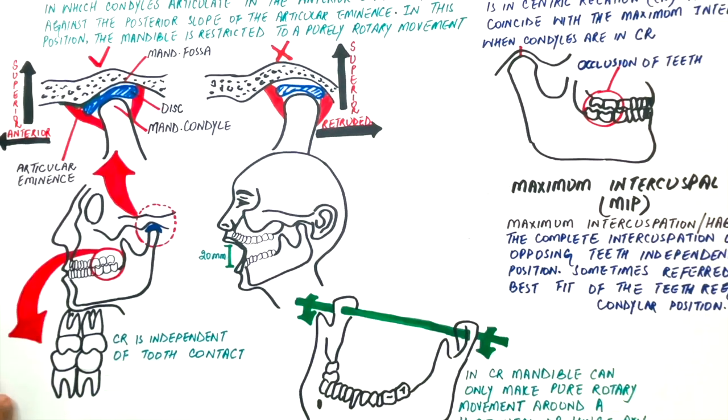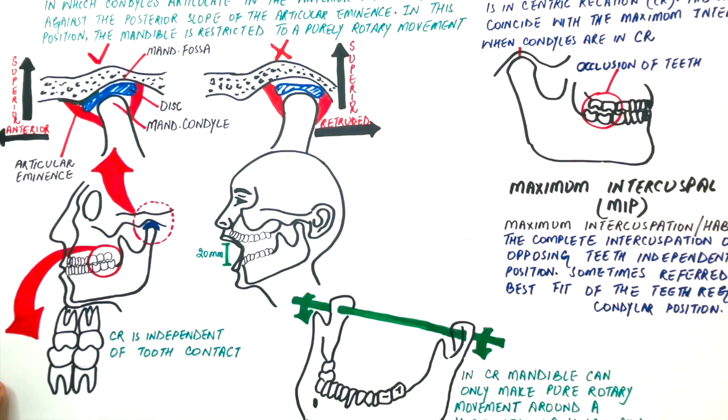In a few people, centric occlusion coincides with the maximum intercuspal position, hence coinciding with the centric relation. But in many other cases, maximum intercuspal position and centric relation vary anatomically, which can result in TMJ problems.